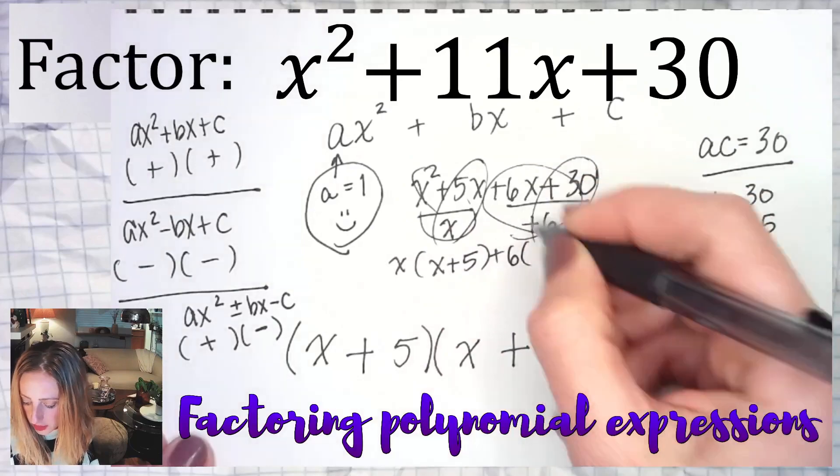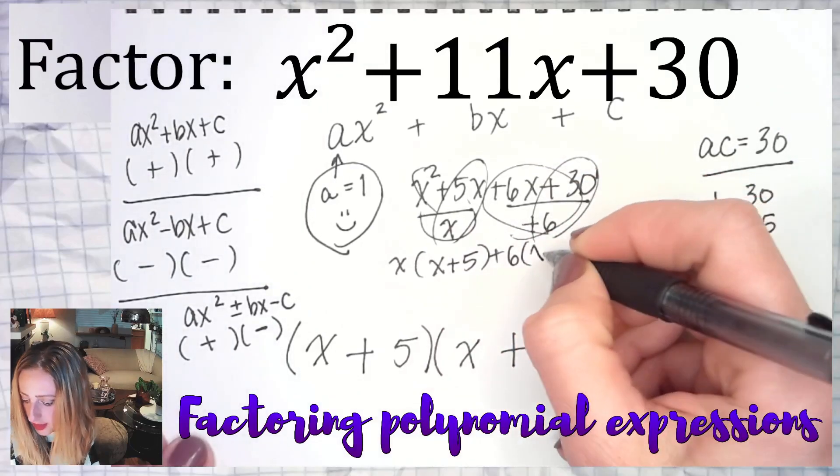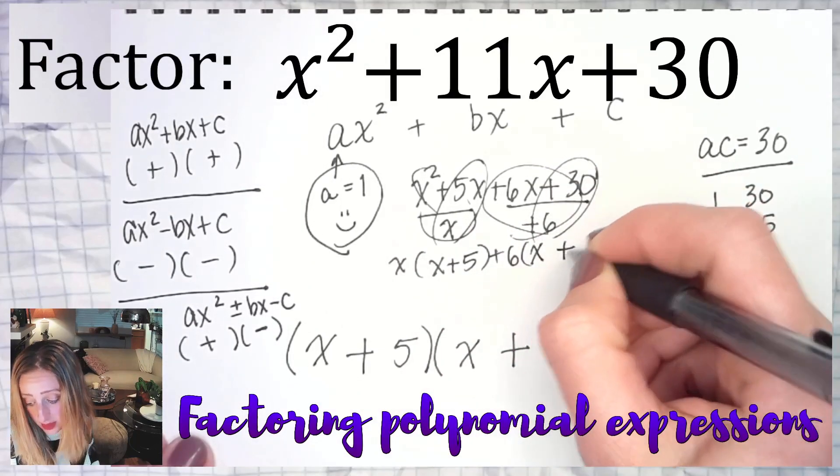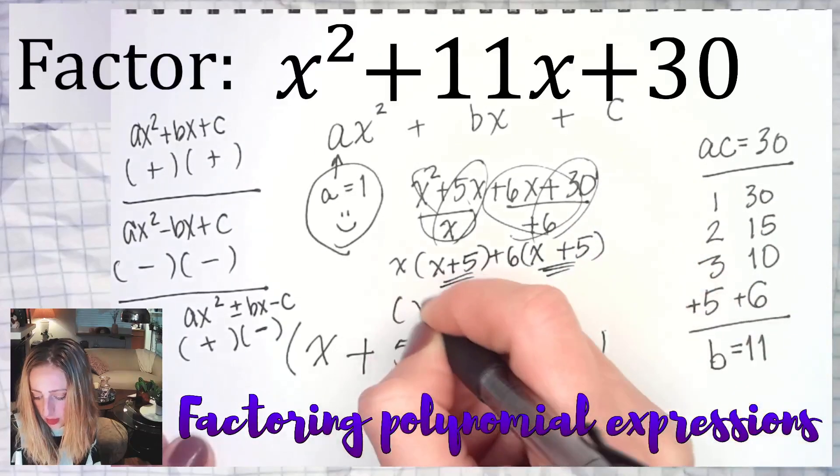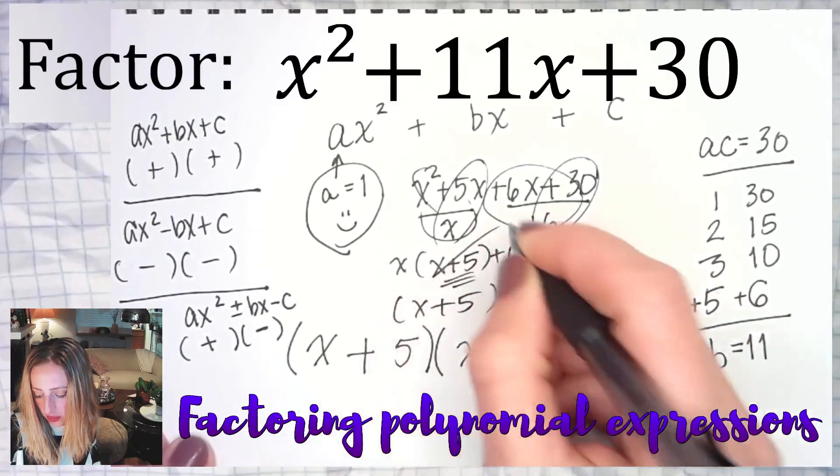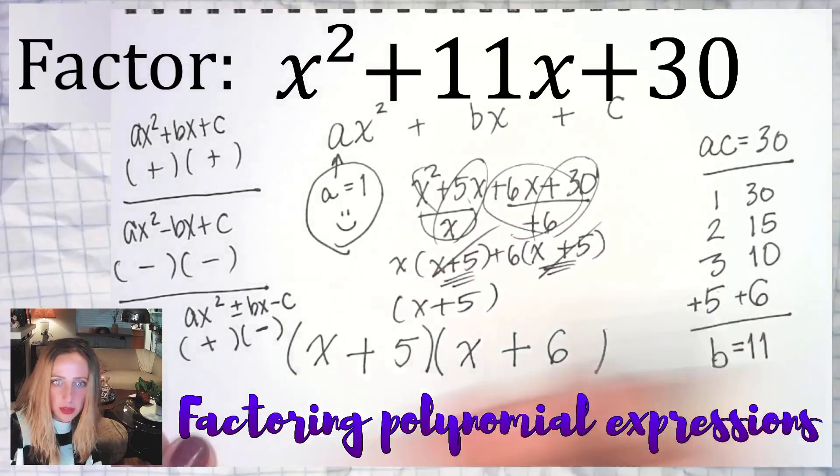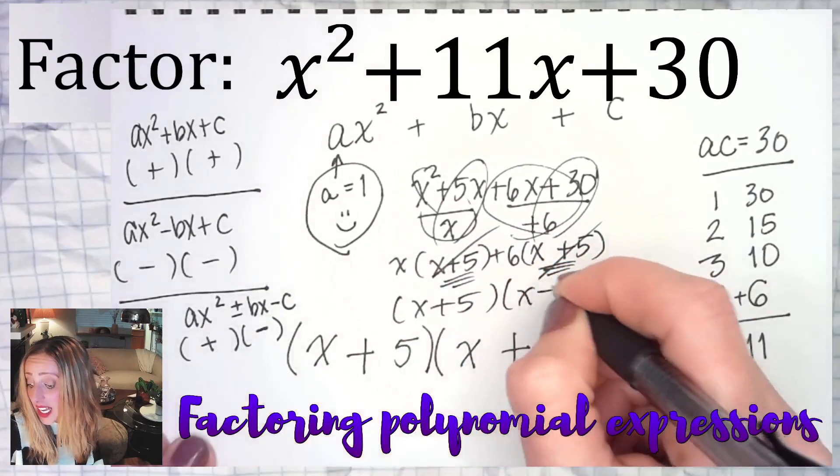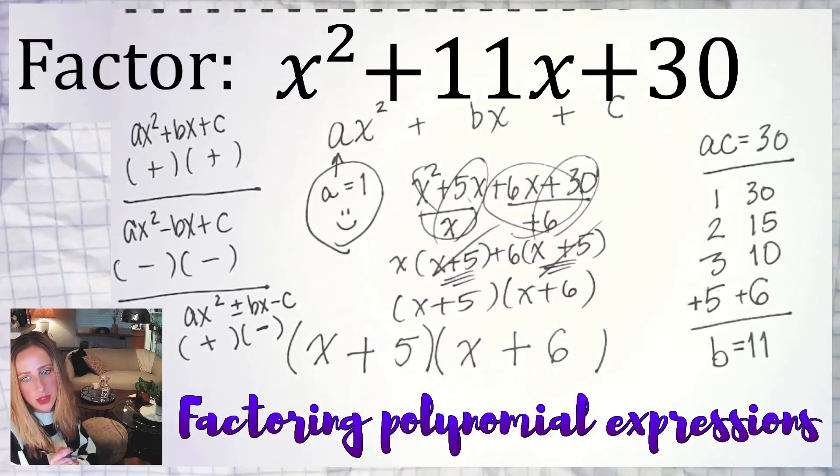Six x over six is x. 30 over six is five. What do they have in common? They both have an x plus five. Factor that out front. If I pull that out front, what's left is x plus six. You get the same answer either way.